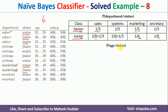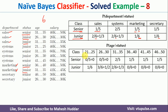Similarly, we need to calculate probability of age given status. The table is similar in structure. For the 21 to 25 age group, there is only one example and it belongs to junior. So probability of 21-25 given senior has numerator 0, giving 0/5. For junior, there is one example in this age group, so we get 1/6.